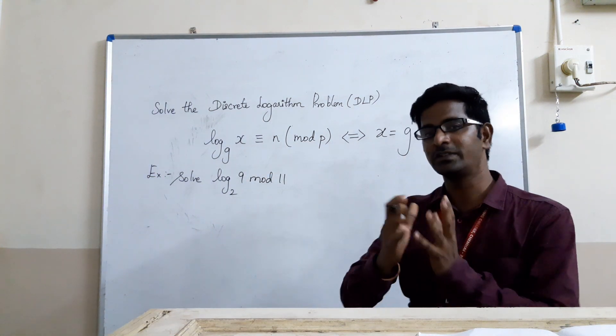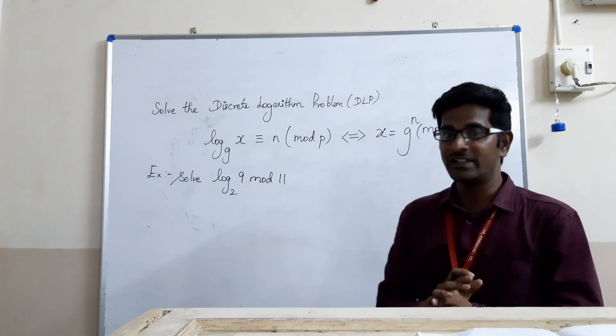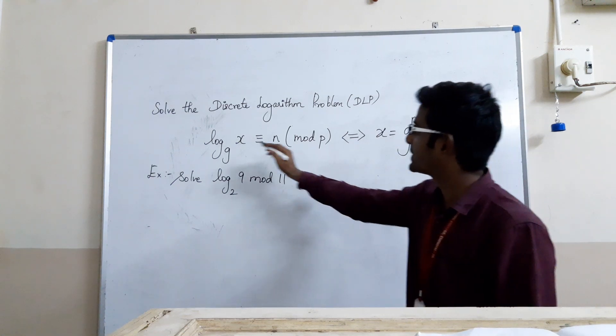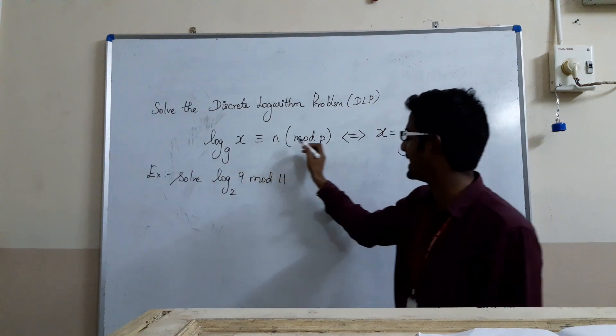For security reasons, we will choose a very big prime number that involves 100 to 200 digits, which is really hard to crack. So log_g(x) is congruent to n mod p.